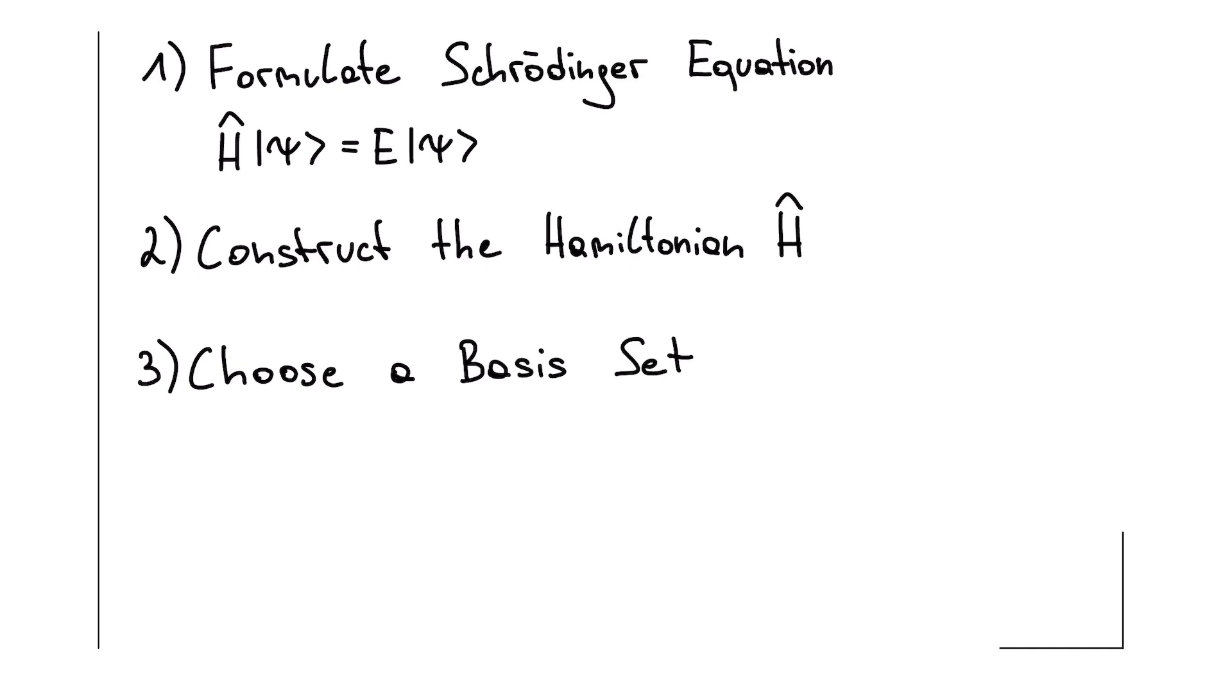The more basis states we include, the more accurately we describe the system. But the trade-off is that the computational cost increases dramatically. You can think of this like zooming in with a digital camera. The higher the resolution, the more detail you capture, but the more memory and processing power you need. That's why basis choice is so crucial. It's about balancing accuracy and computational feasibility.